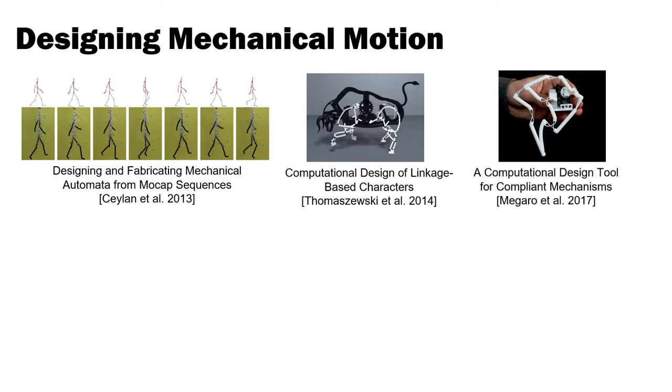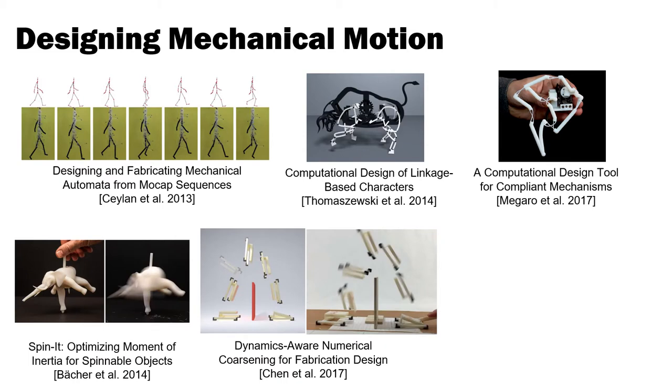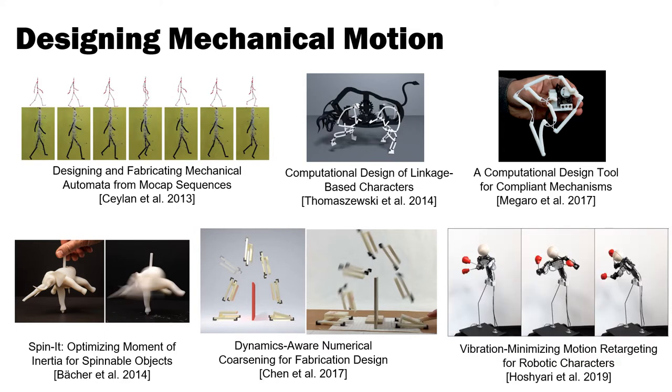Our work has close ties to several existing fields in graphics and engineering. For example, computational motion design for mechanical systems has been a subject of research in our community for quite some time now. Few works from the graphics community on fabrication-oriented design have considered dynamics so far. These two works here are exceptions to this rule, but their goal is not to create periodic motions. Perhaps more closely related to our effort is the recent work by Hoshiari et al. on motion control for robotic characters. While they also predict oscillations induced by external forcing, their goal is to suppress vibrations by optimizing actuation parameters. In contrast, we aim at generating large amplitude oscillations by optimizing for shape, mass, and material parameters.